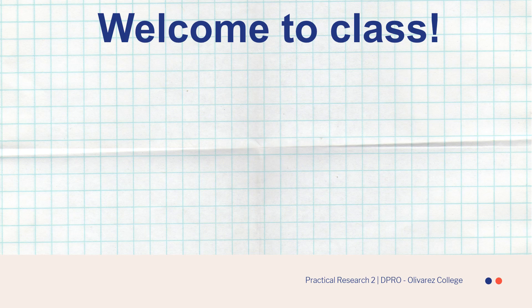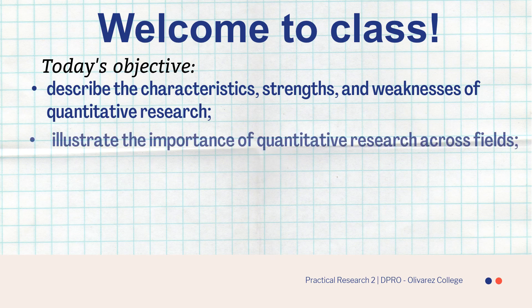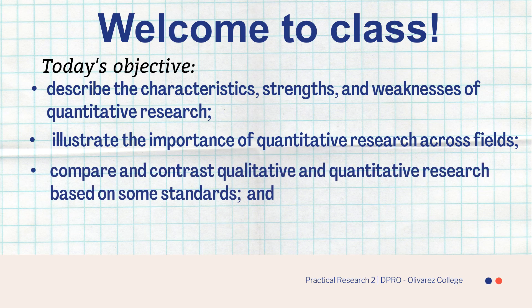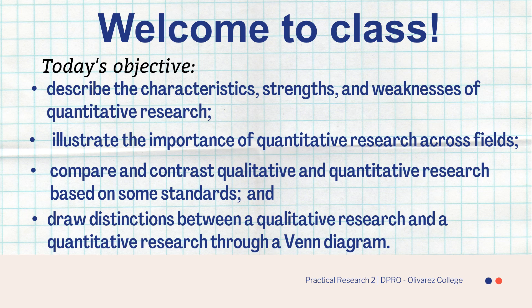Before thoroughly discussing our lesson for the day, let us have a run through our today's objectives. First, describe the characteristics, strengths, and weaknesses of quantitative research. Next, illustrate the importance of quantitative research across fields. Third, compare and contrast qualitative and quantitative research based on some standards. And draw distinctions between qualitative and quantitative research through a Venn diagram.